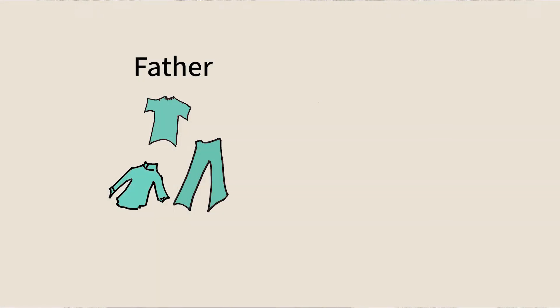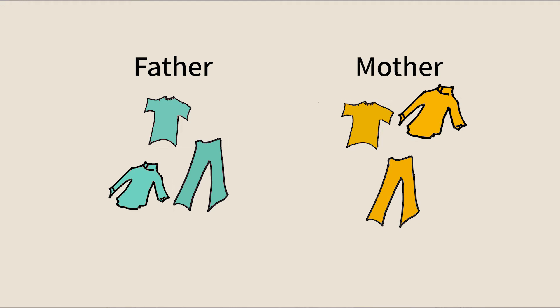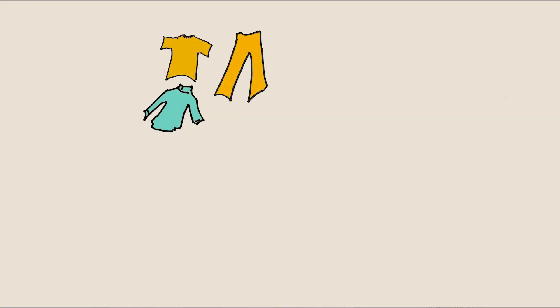I inherited from my father a green jumper, a green t-shirt, and green pants. From my mother I inherited a yellow jumper, a yellow t-shirt, and yellow pants. I will pass on to my children a jumper, a t-shirt, and pants. How many different color combinations are there?